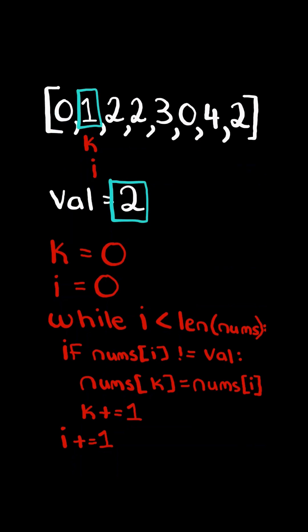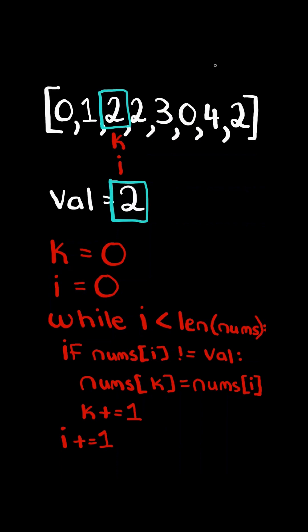Again, the number at the ith pointer does not equal value, so we set nums at k equaling the value at nums at i, and we advance k, and finally advance i. Now the number at the ith pointer does equal value, so in this case we only advance i. Again, the number at the ith pointer does equal value, so once more we only advance i.